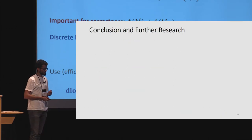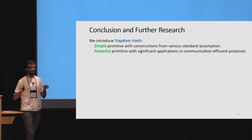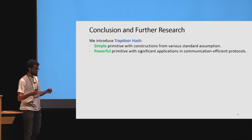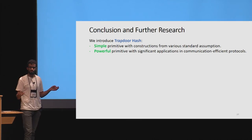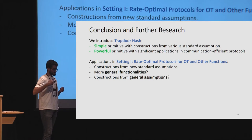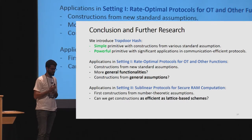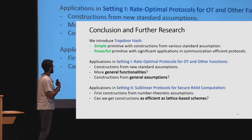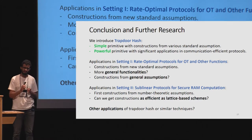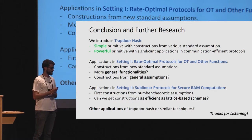To conclude: we introduced this new primitive — trapdoor hash — which is simple and easy to realize under many standard assumptions, yet very powerful, enabling many new results not achievable before. We showed applications in two scenarios, and one can ask many interesting questions. I think the most important question is whether these techniques and this primitive can yield further applications.